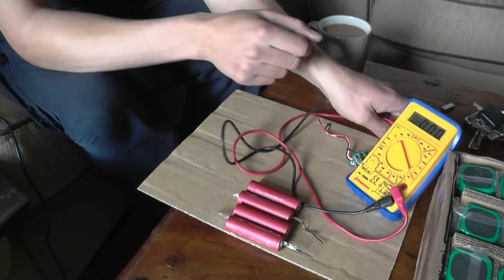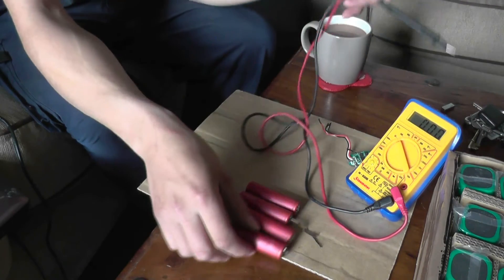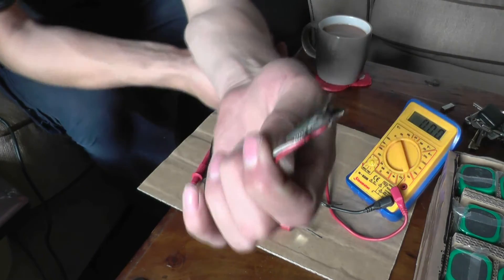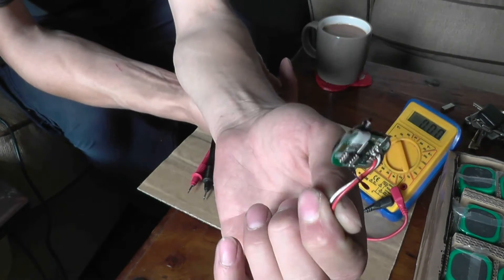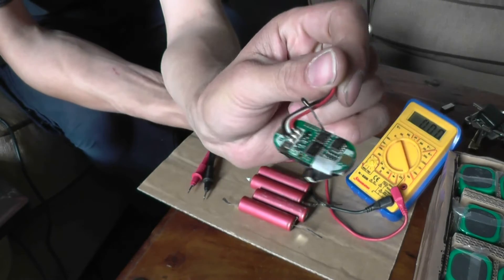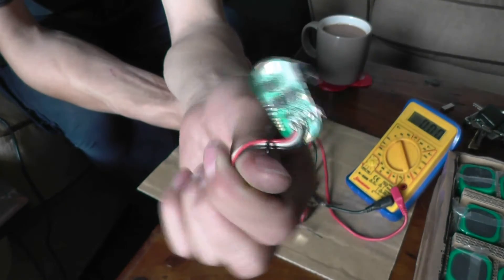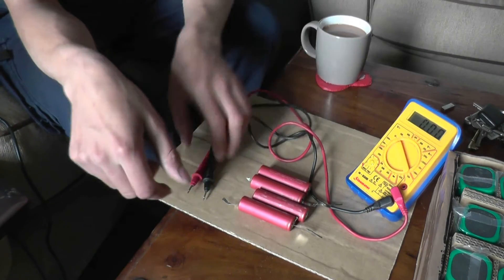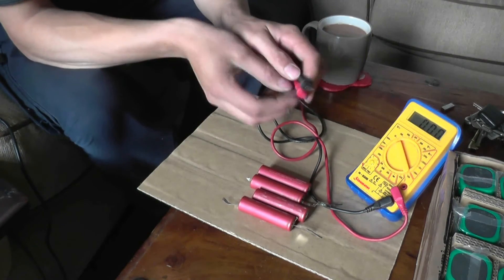Right, well everything's apart. I've got my four cells out of the pack. There's the battery protection control - I'll save that and play around with it another day. Well I've got a few so that one doesn't matter so much. So let's see what we've got in the way of voltages.